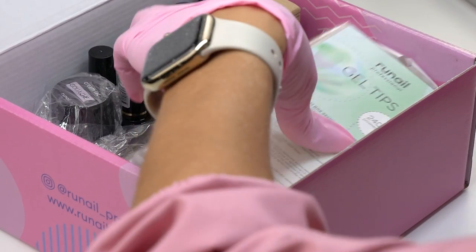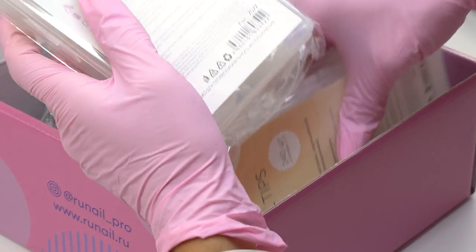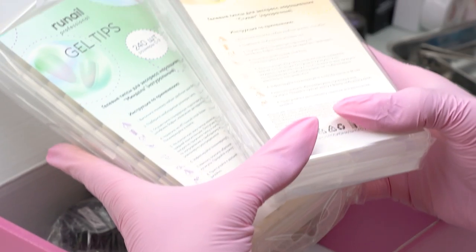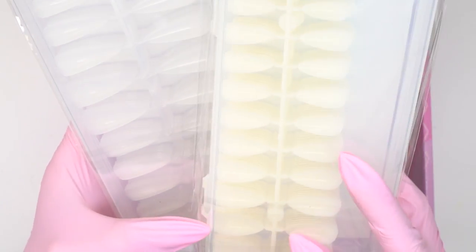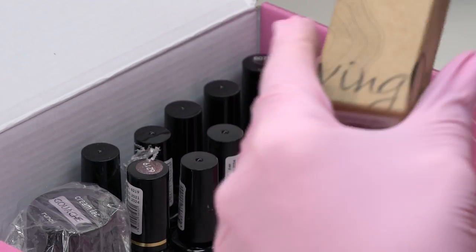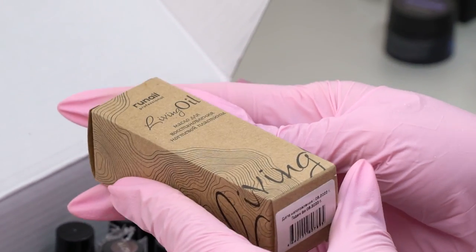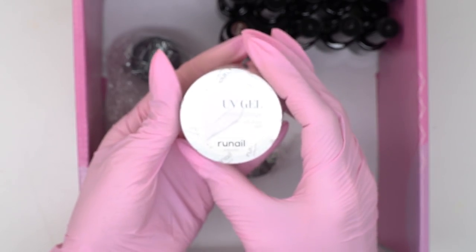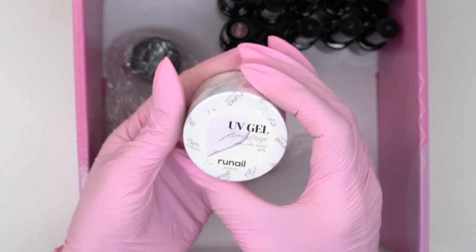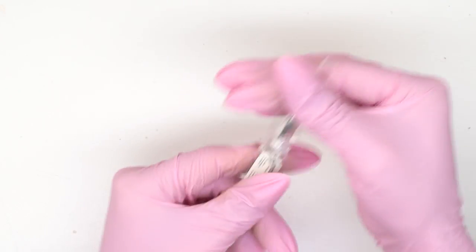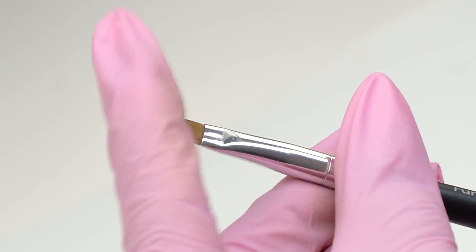I've got some new products by the brand Runail. And the first item are these gel tips. Natural milky and long clear ones. A cosmetic oil for nail plate treatment. My favorite milky gel that I always ask them to send. A new oval brush for better application.